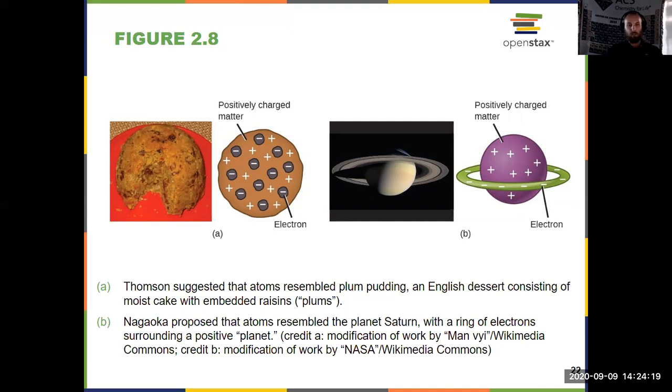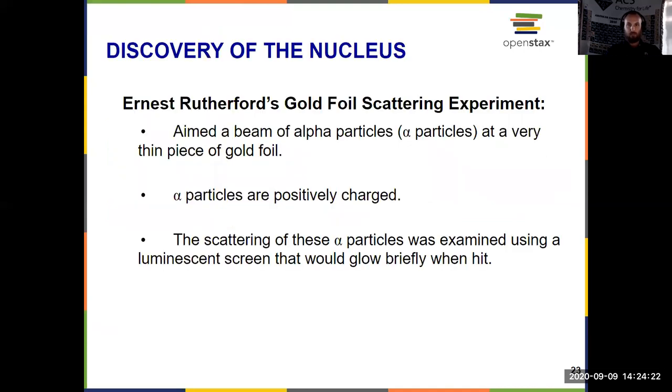So what came next? Next was the discovery of the nucleus itself, which is in the center of every atom. And the discovery of the nucleus came from Ernest Rutherford and his gold foil experiment. And effectively, what Rutherford did was use nuclear decay to get alpha particles, which he then shot at a very thin piece of gold foil. And these alpha particles are positively charged.